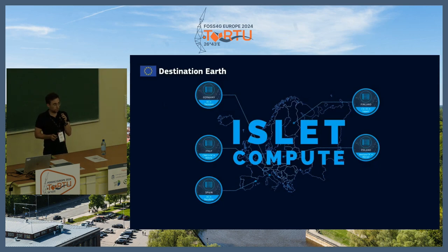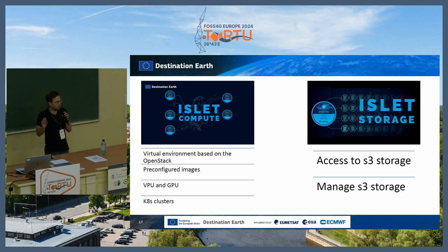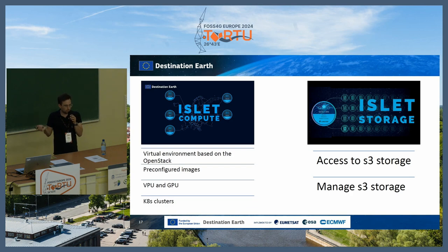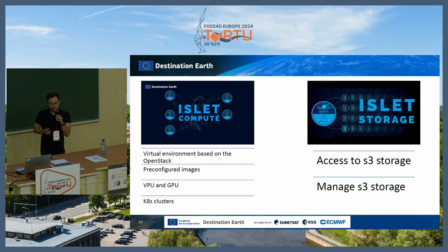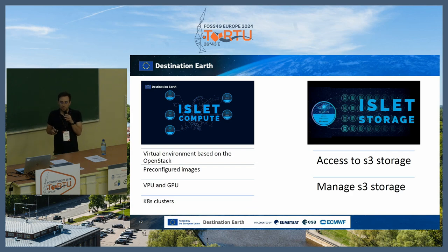The last service is Islet Compute — the cloud infrastructure divided into two parts: Islet Compute and Islet Storage. The cloud deployed within this project is based on our own solution built on OpenStack, an open source project. Through Islet, we provide pre-configured images containing ESG tools and software, available as virtual machines with CPU or GPU. Users can also create their own Kubernetes clusters. Islet Storage provides access to and management of object storage.